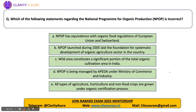Next question: which of the following statements regarding MPOP is incorrect? The options include: MPOP has equivalents with organic food regulations of the European Union and Switzerland; MPOP was launched during 2005; wild area constitutes a significant portion of total organic cultivation area in India; MPOP is managed by APIDA and the Ministry of Commerce and Industry; and all types of agriculture, horticulture, and non-food crops are grown under the organic certification process. The correct answer is option B — it is incorrect because MPOP was actually launched in 2001.